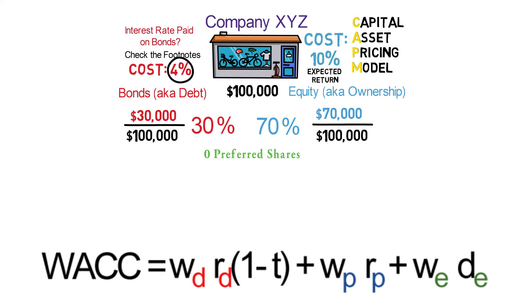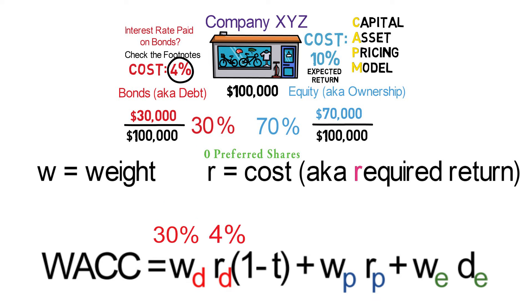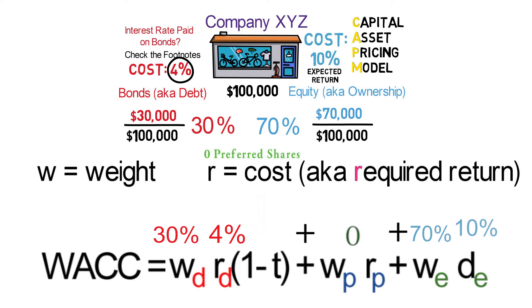So let's slide back over to the formula. As you may notice, there are two primary letters: W stands for weight and R stands for the percentage cost, often called the required rate of return — hence the letter R. So WD stands for the weight of the debt, which we know is 30%. RD stands for the cost of debt, which we know is 4%. I'm going to skip the (1 - T) for now and come back to that in a second. WP is the weight of the preferred shares, RP is the cost of preferred shares — we don't have any preferred shares, which makes this whole section zero. And for equity, we have 70% weight and a 10% required rate of return.